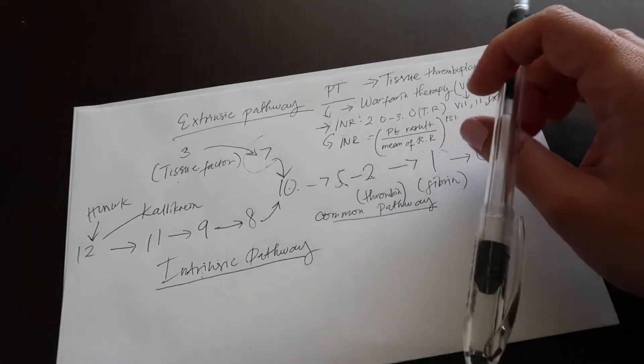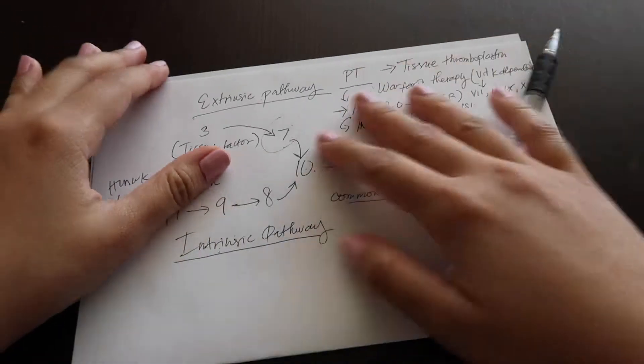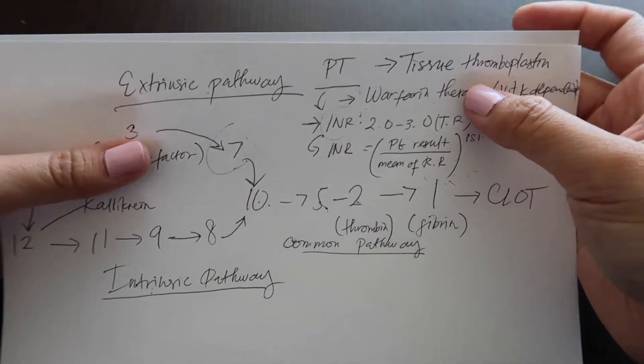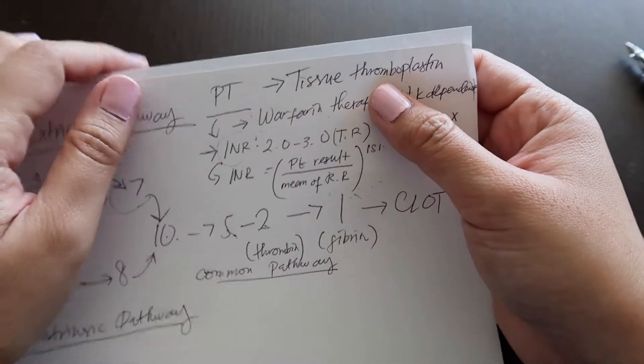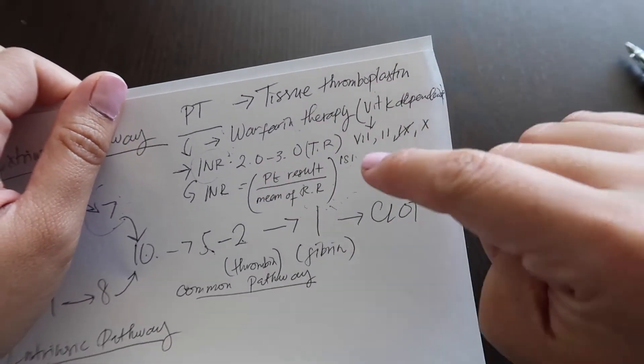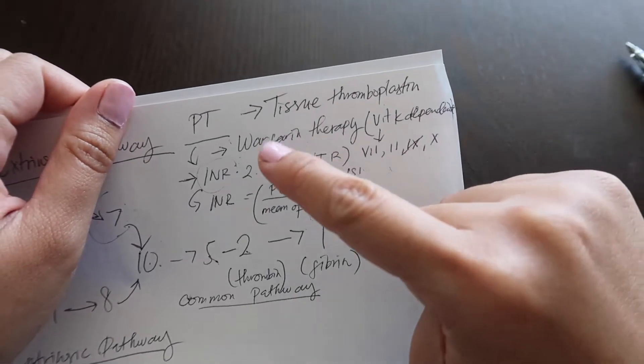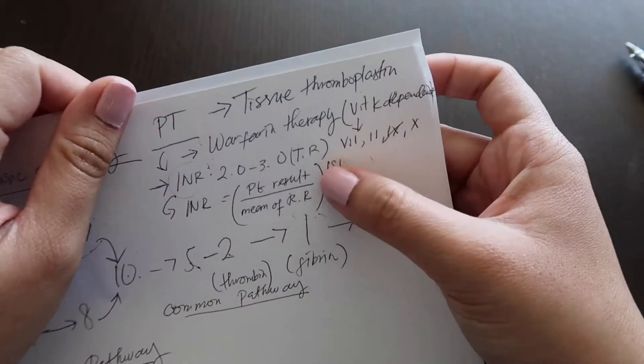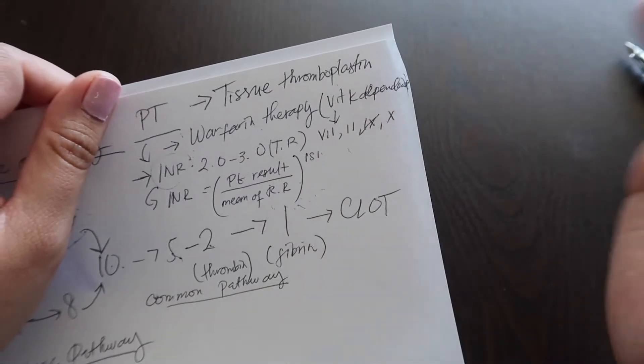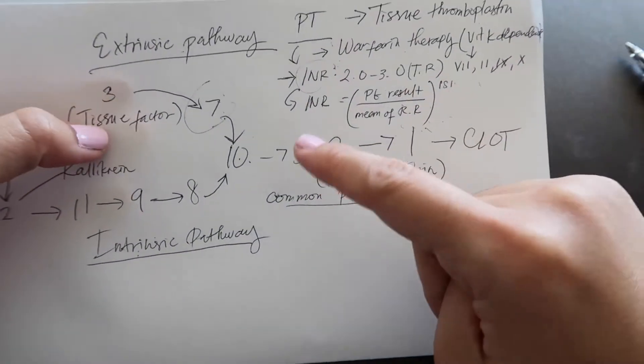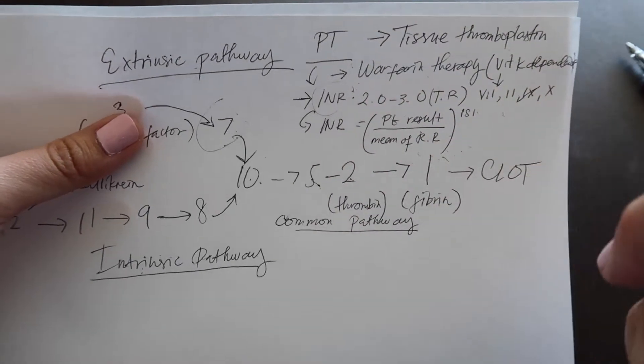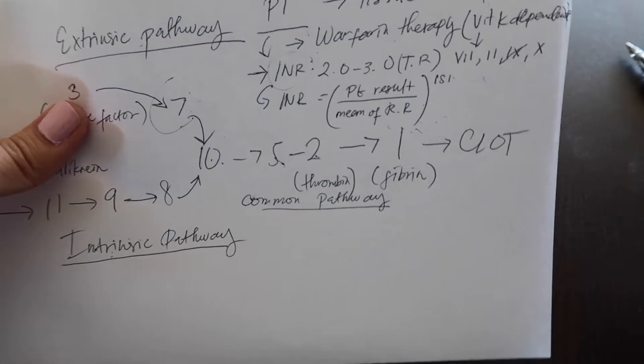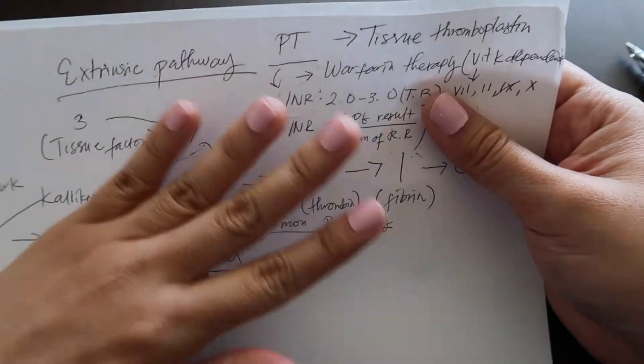So a quick review. We have the PT to identify if the extrinsic pathway is going wrong. The reagent contains tissue thromboplastin. It is used to monitor warfarin therapy. Therapeutic range for warfarin therapy is 2 to 3. Warfarin therapy messes up your vitamin K-dependent factors. This means that these specific factors 7, 2, 9, and 10, they need vitamin K to function. And then we have INR. This is the formula to get the INR, which is patient result over mean of reference range to the power of international sensitivity index.